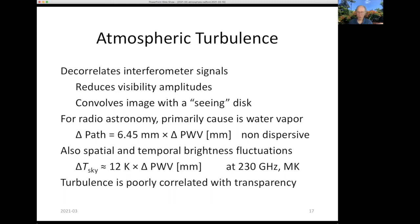Even though the turbulence is caused by water vapor, the magnitude of the turbulence is actually poorly correlated with the magnitude of the transparency. The transparency measures the bulk amount of water vapor in the atmosphere, whereas turbulence is caused by small fractions of that bulk water vapor, typically concentrated in turbulent layers where there may be shear or other dynamic effects in the atmosphere.